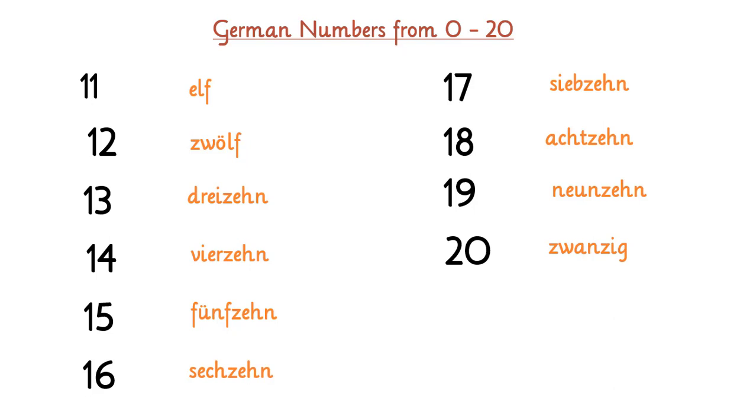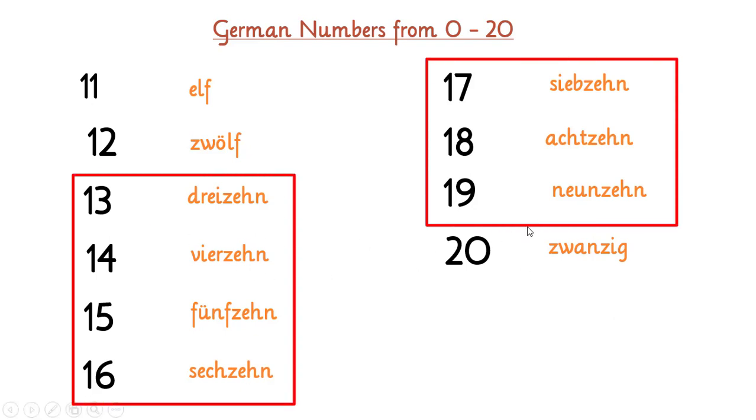And as you can see, we have completed from 0 to 20. The numbers that you can see are exactly used in German language, and the pronunciations and spellings are like this. And there's a trick: as you can see, 10 means zehn, zehn. And from 13 to 19 has zehn at the end. Okay, so 13 means dreizehn, dreizehn. 14 means vierzehn, 15 means fünfzehn, and so on. And 19 has neunzehn.